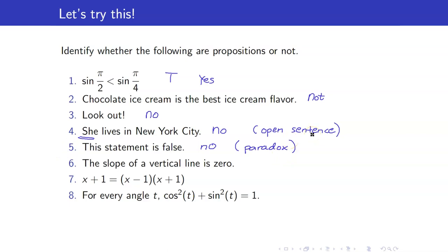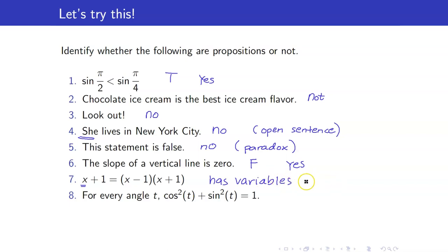Next, 'the slope of a vertical line is zero.' This statement is false, so therefore this is a proposition. Next, 'x plus one equals x minus one times quantity x plus one.' Take note that you have variables here. If it has variables, it cannot be a proposition because, just like number four, we do not know what x is. This is also an example of an open sentence. We will deal with open sentences in our succeeding lectures.